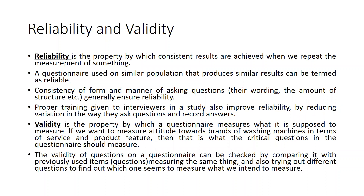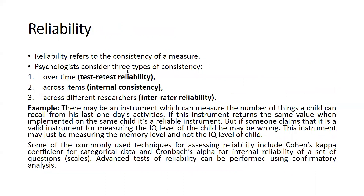Validity is something different and I am going to share the validity part in my next video, where I will cover all the types of validity. You can see here: test-retest reliability, internal consistency, and inter-rater reliability. For example, there may be an instrument which measures the number of things a child can recall from their last day's activity. If this instrument returns the same value when implemented on the same child, it is a reliable instrument.